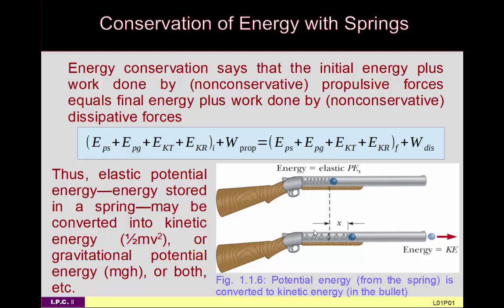A more mundane example: a pop gun pointed up in the air. You have potential energy from the spring, potential energy from gravity, and kinetic energy. If there's friction between the ball and the barrel, you might also have rotational kinetic energy or work done by friction.